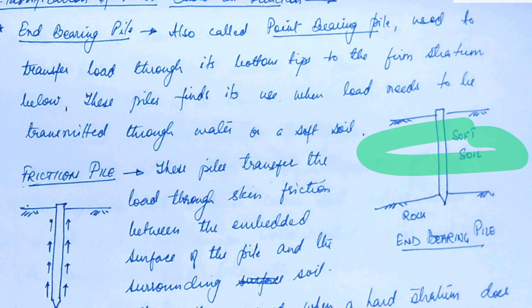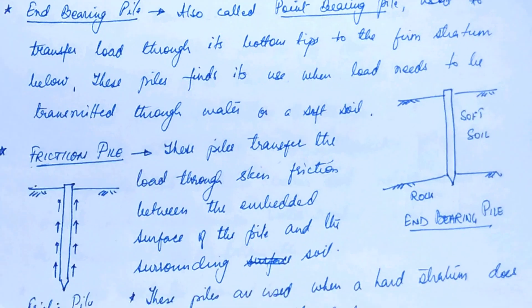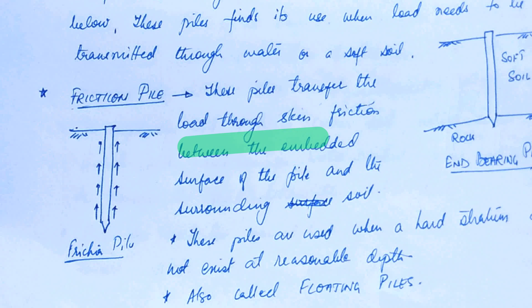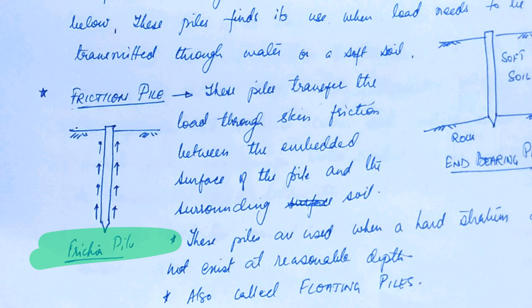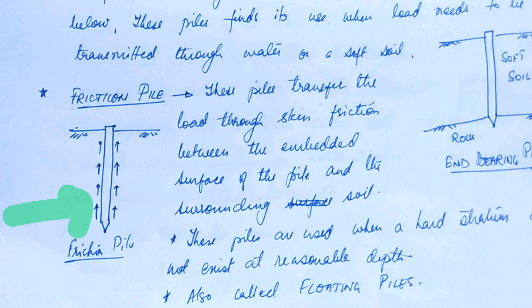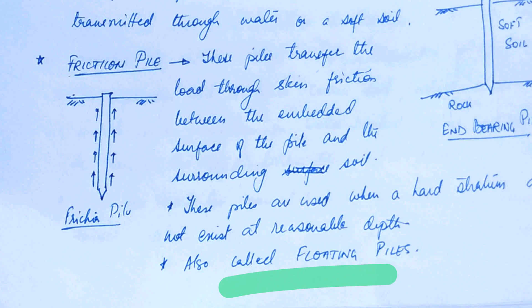We can also have friction piles. Friction piles transfer loads through skin friction between the embedded surface of the pile and the surrounding soil. These piles are used when a hard stratum does not exist at a reasonable depth. The load is transferred by friction between the surface of the pile and the surrounding soil. These are also called floating piles because they do not rest on any firm stratum.